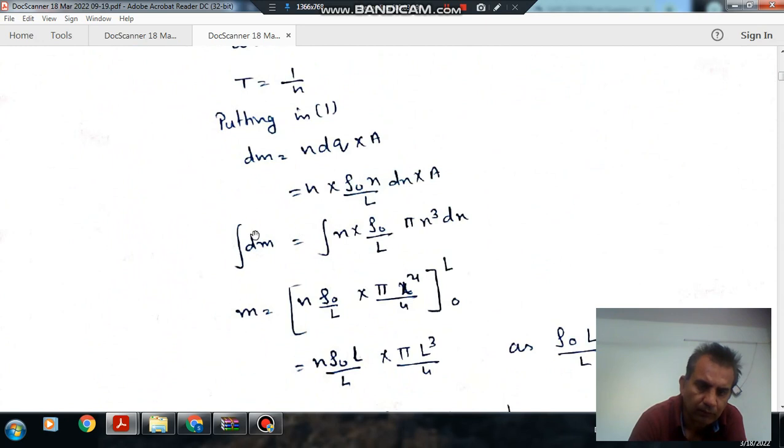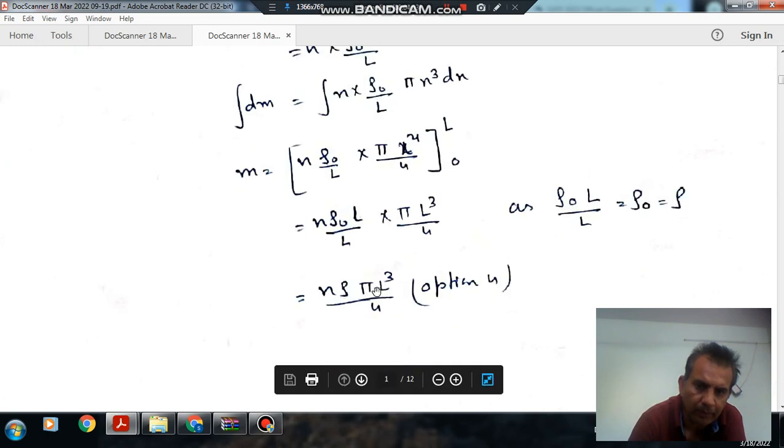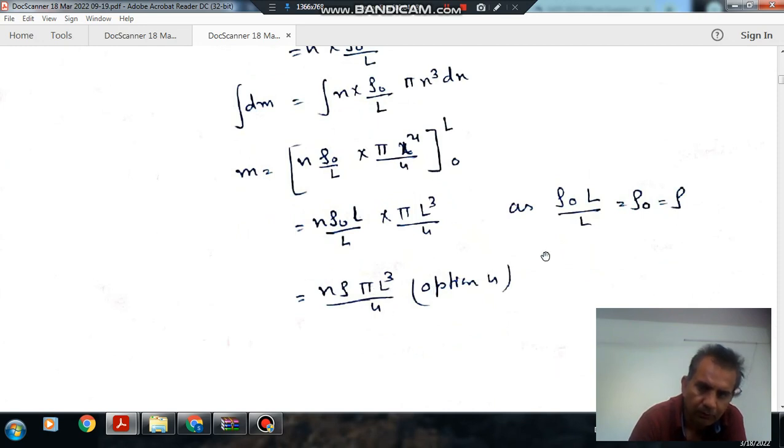So now to find out the total magnetic moment, we can integrate it. So it will be n multiplied by ρ₀/L, π·x³dx. It will be n·ρ₀/L times π·L⁴/4. So this will be nρ₀πL³/4.